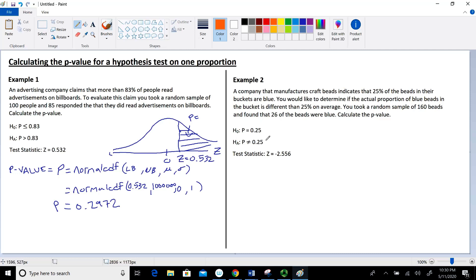The null hypothesis is p equals 0.25, and the alternative is p is not equal to 0.25. The test statistic I calculated is given. Now let's look at this graphically using our standard normal distribution.